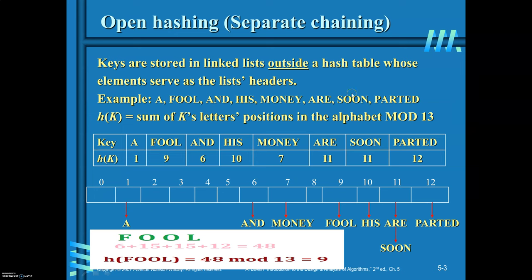In open hashing, keys are stored in linked lists outside a hash table whose elements serve as the list headers. Given eight keys to be organized in a table of size 13, define a hash function k mod 13. For 'A', it occurs in the first position in alphabetical order, so 1 mod 13 = 1. For 'full', 15 + 15 + 12 = 48, and 48 mod 13 = 9. Similarly, 'and' maps to 6. In this way, hash key values are computed for all the keys.